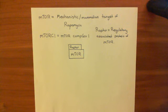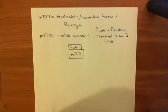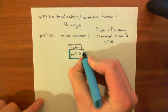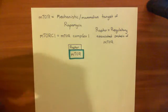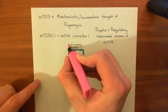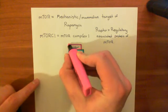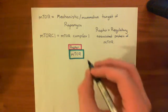At the moment we're discussing the mechanistic target of rapamycin complex 1. mTORC1 consists of the protein mTOR itself along with accessory proteins such as RAPTOR, which is the regulatory associated protein of mTOR, and also a protein known as MLST8.